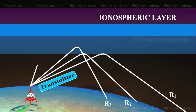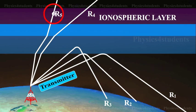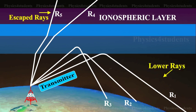If the angle of incidence is reduced further, the radio waves penetrate through the layer as shown by the rays R4 and R5. For a particular angle of incidence,